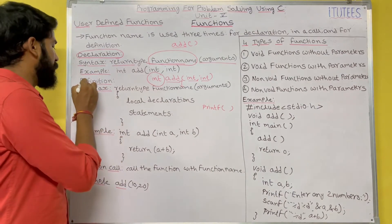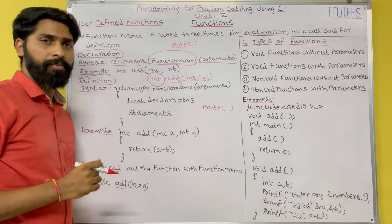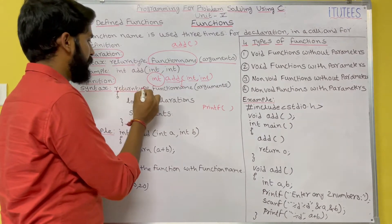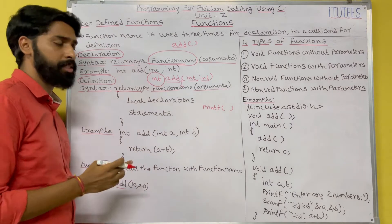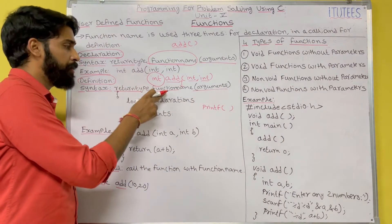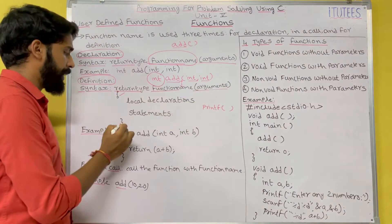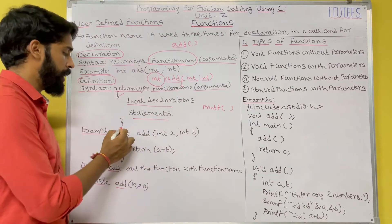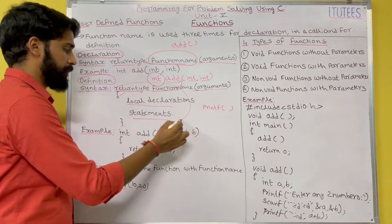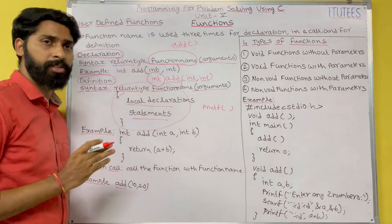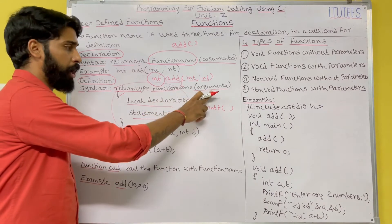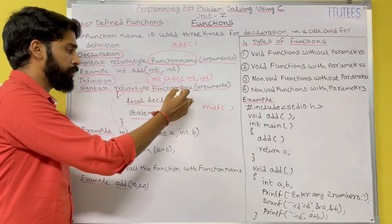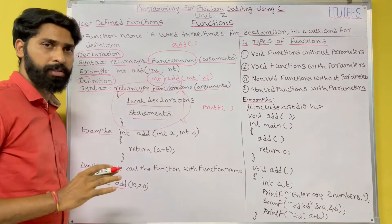Next is function definition. The syntax for writing a definition is: first write the function header, which consists of return type, function name, and arguments. After that, open a bracket where you define the local declarations and statements, then close the bracket. The function definition consists of the function name, arguments, and return type, and inside the block you define local declarations and statements.